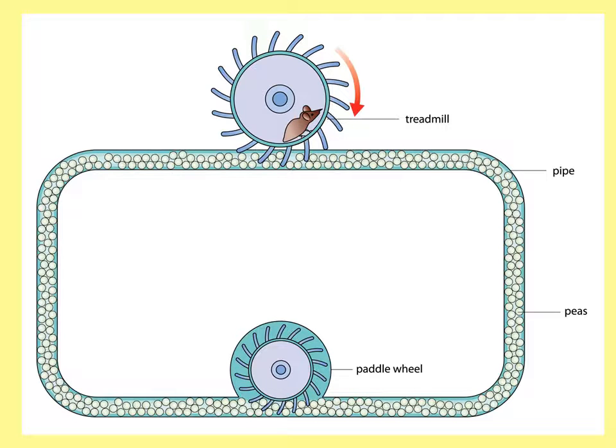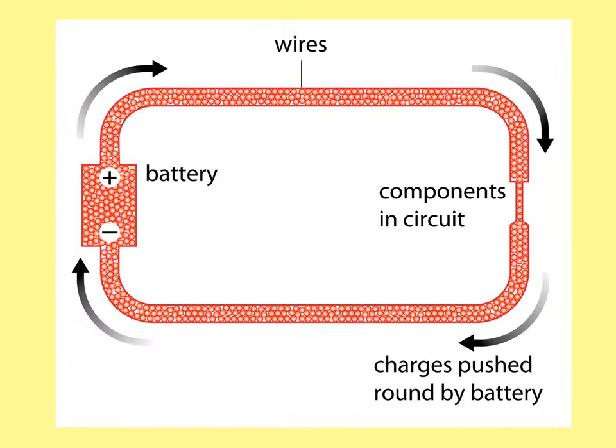Here's the first model. There's a mouse going around a treadmill at the top, a pipe with some peas in it, and a paddle wheel at the bottom. As the mouse turns the treadmill, the peas start going around the pipe, and as they're pushed through the paddle wheel they turn it, then continue moving around in a continuous circuit — round and round. This is a very good example of how electricity works.